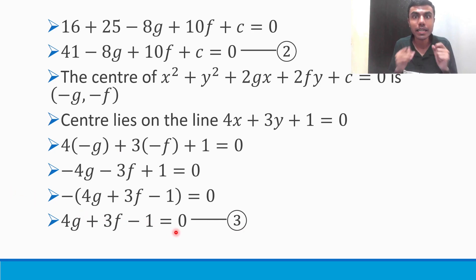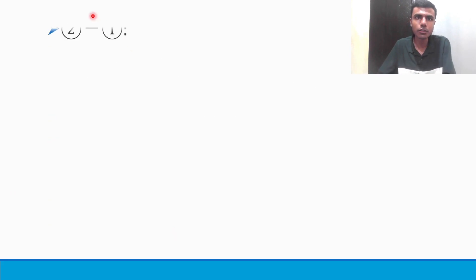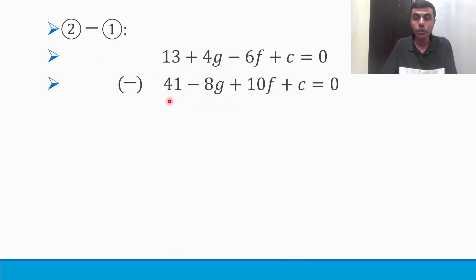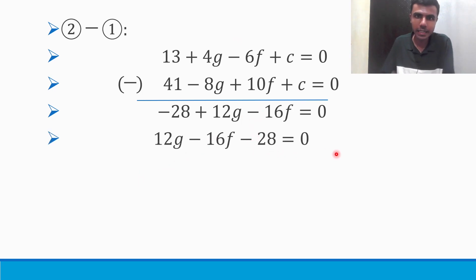Now I need one more equation without c. How can I find it? Pretty simple. I just need to do equation 2 minus equation 1. What was my equation 2? This. What was my equation 1? This. Now I'm doing subtraction. Be careful. This is 13, not plus 13, minus 41. Whatever sign here, it is plus, so it will become minus. 13 - 41 is -28. 4g - 8g there, but subtraction is there, so sign will change. 4g + 8g, what is 4g + 8g? It is 12g. Likewise, here I have -6f and +10f, but minus is there. So -10f - 6f - 10f is -16f. And then c - c is 0. Standard form: 12g - 16f - 28 = 0.